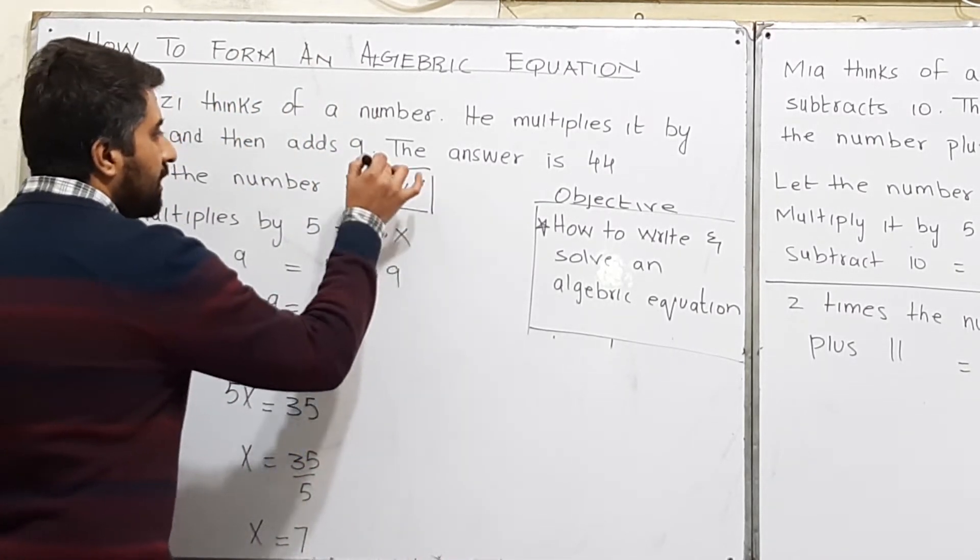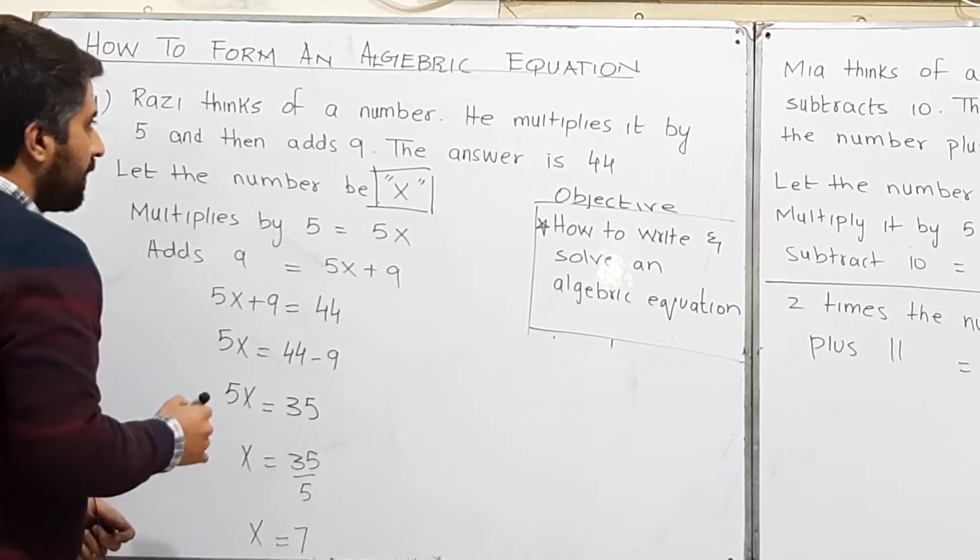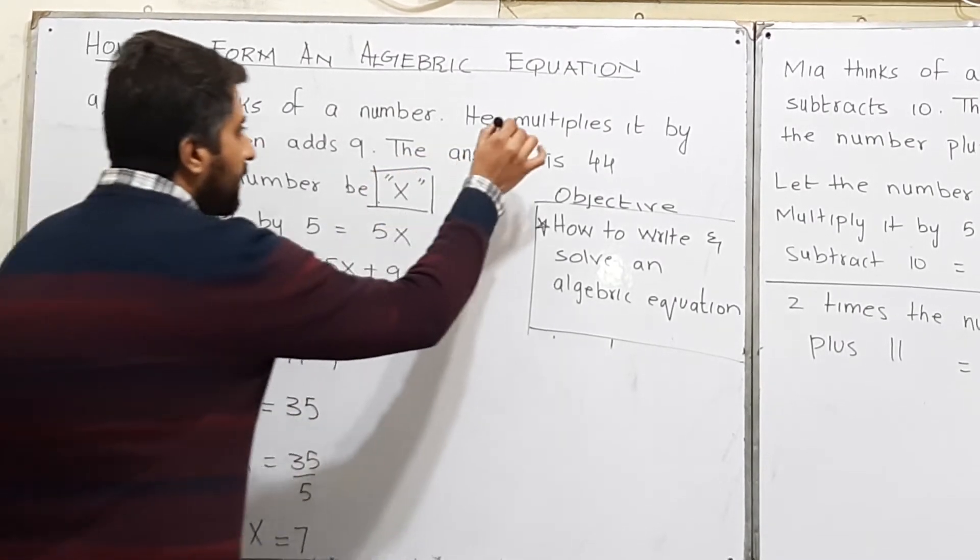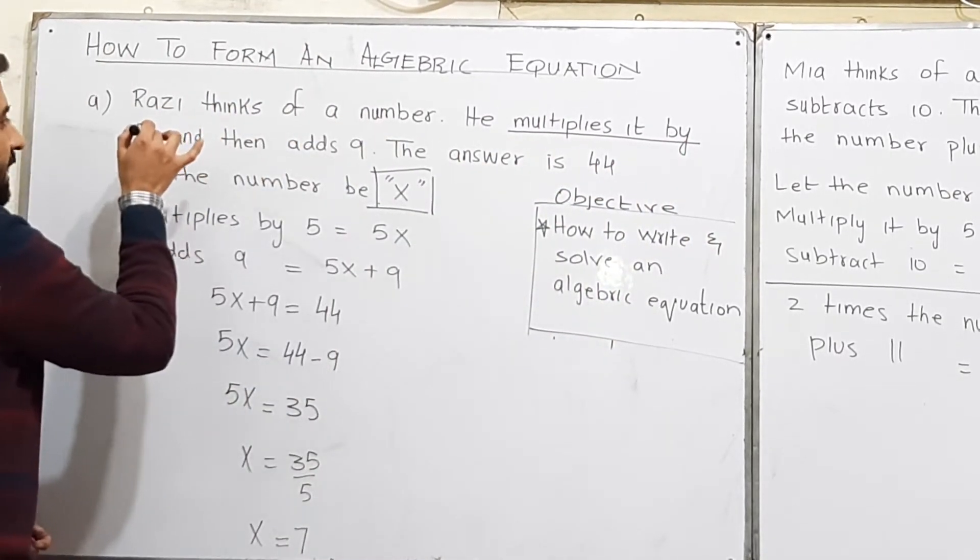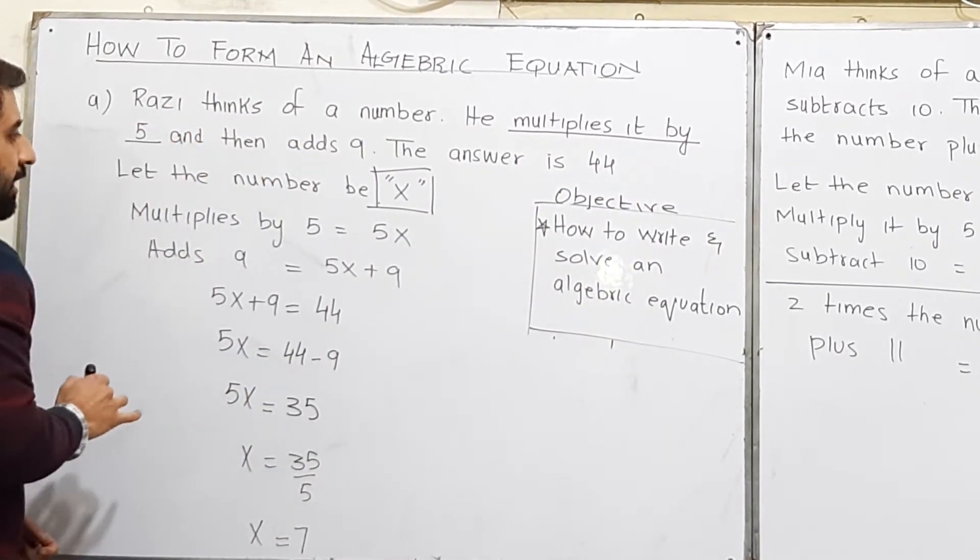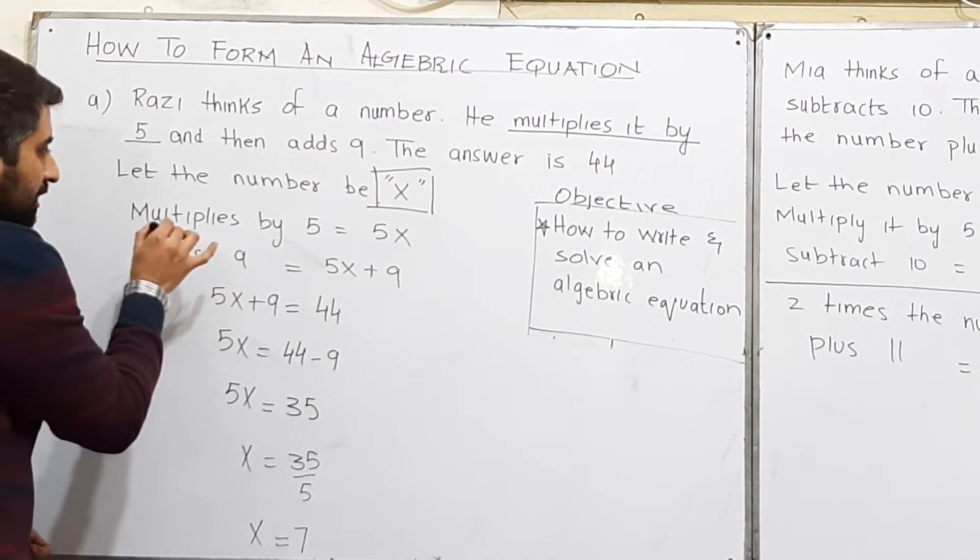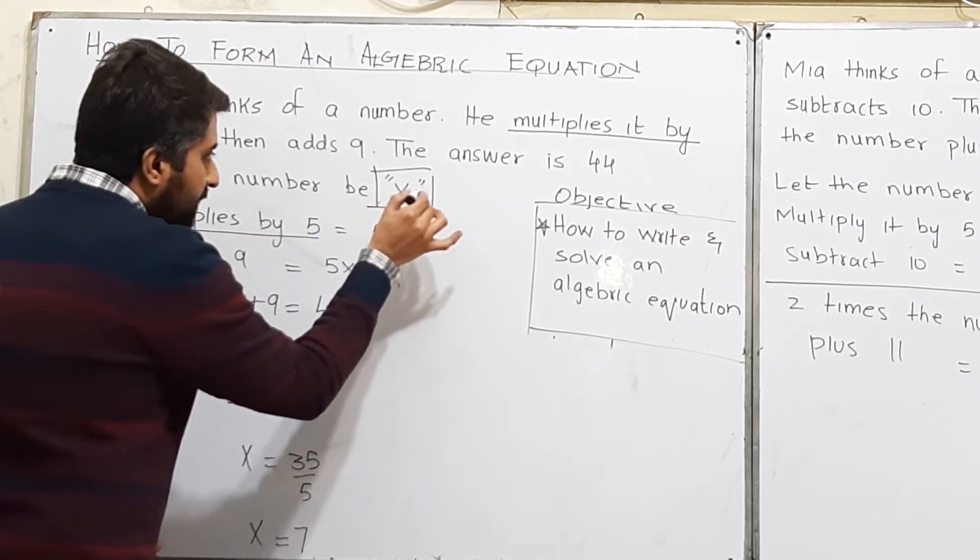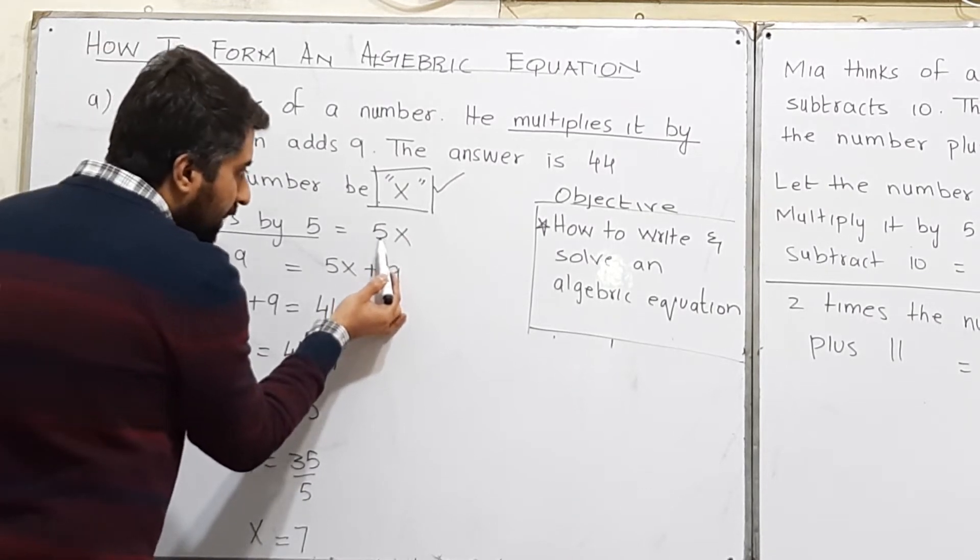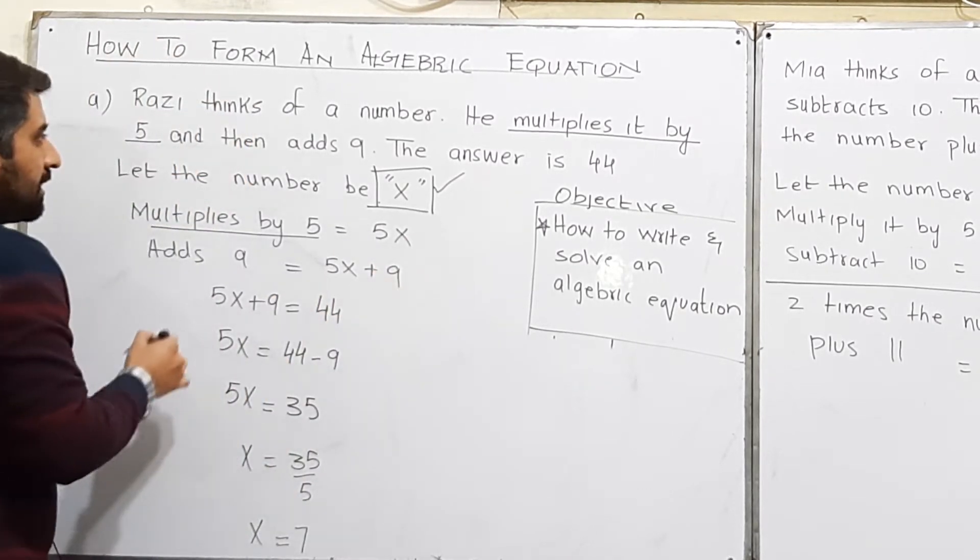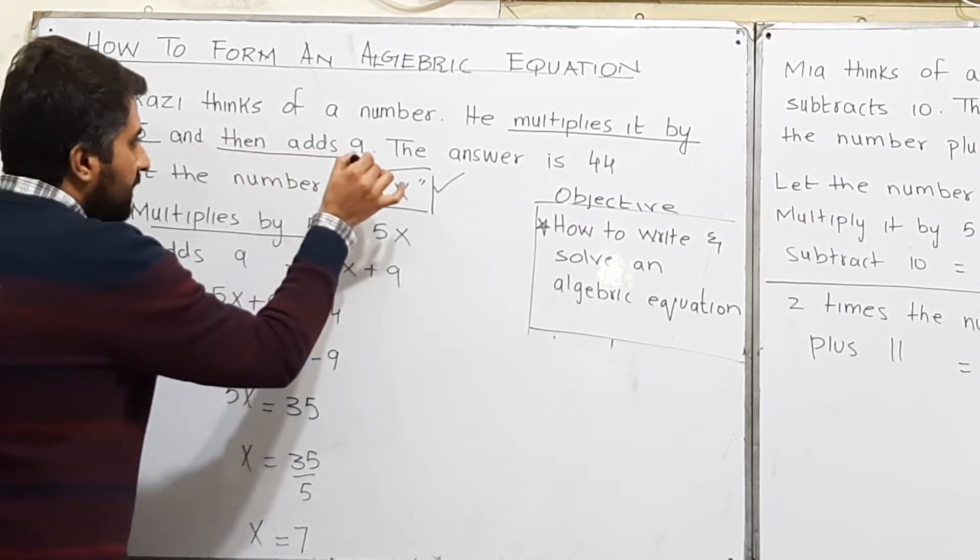Let the number be x. Then he multiplies it by 5. So multiply your number, which is x, by 5. Your answer will be 5x. Then add 9.